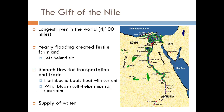The Nile also provides a steady supply of water, which can be used for many different purposes — first and foremost for drinking, as well as bathing and cleaning. The ancient Egyptians had that supply of water for that variety of purposes. So the Nile truly was a gift to the ancient Egyptians.